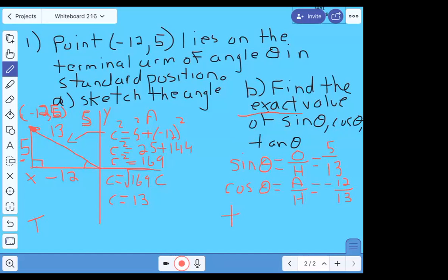And the same thing with tangent. If I do tangent of theta, and I have opposite over adjacent, then opposite is 5, and adjacent is minus 12. And again, I'm going to get a negative value for tangent, but I knew I should, because sine is the only one that's positive in that quadrant.